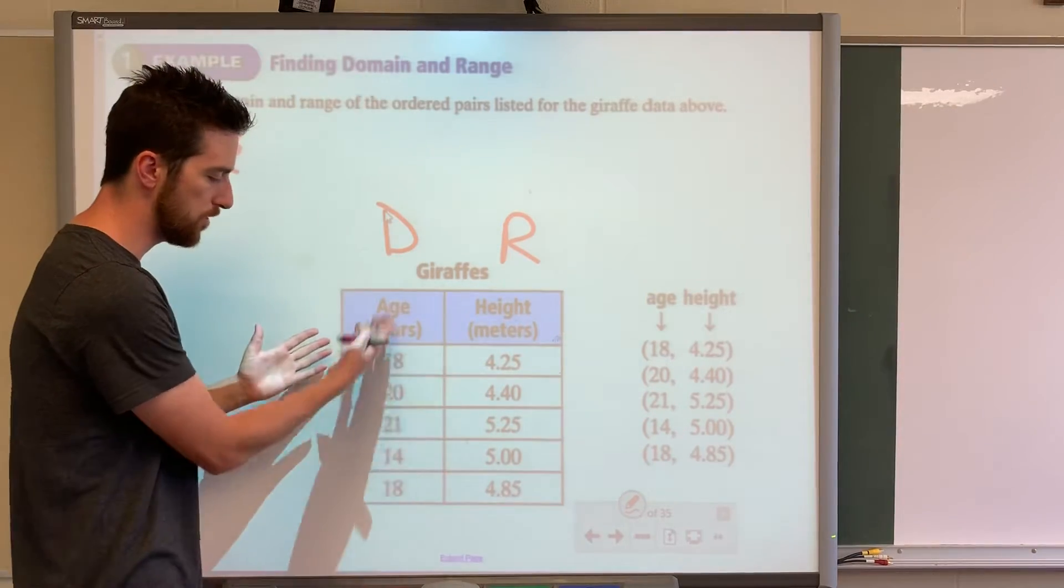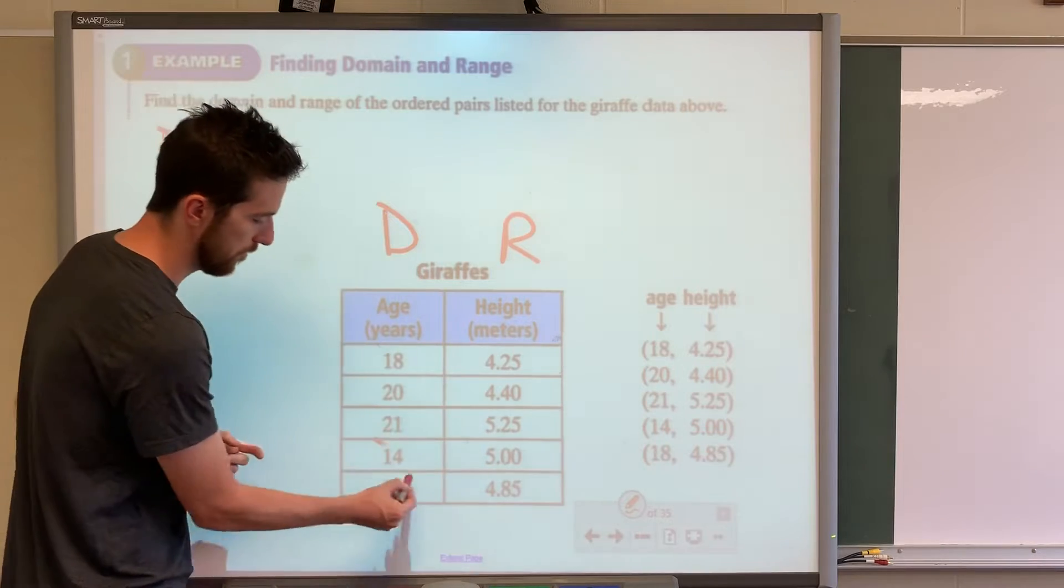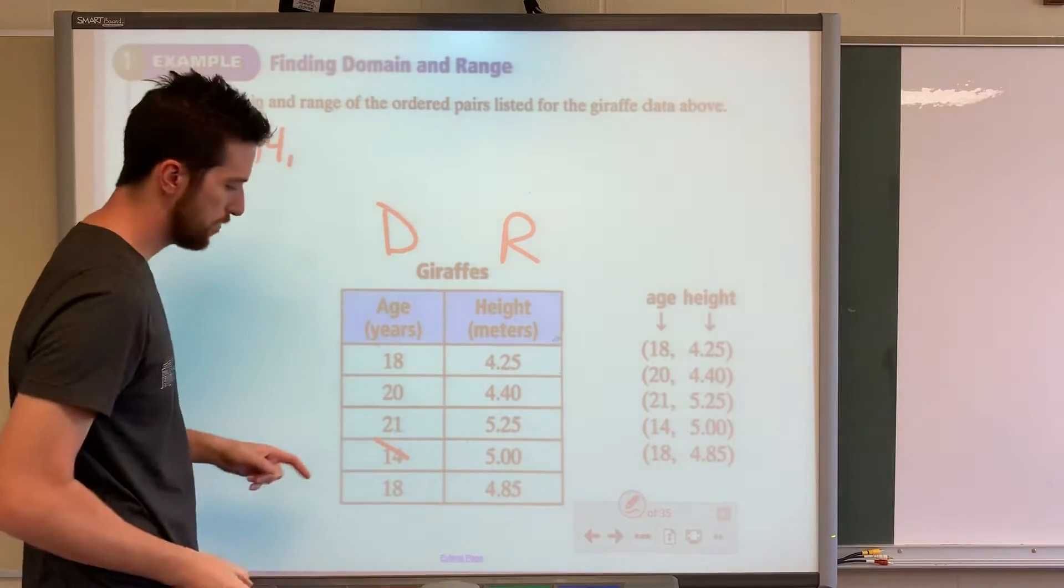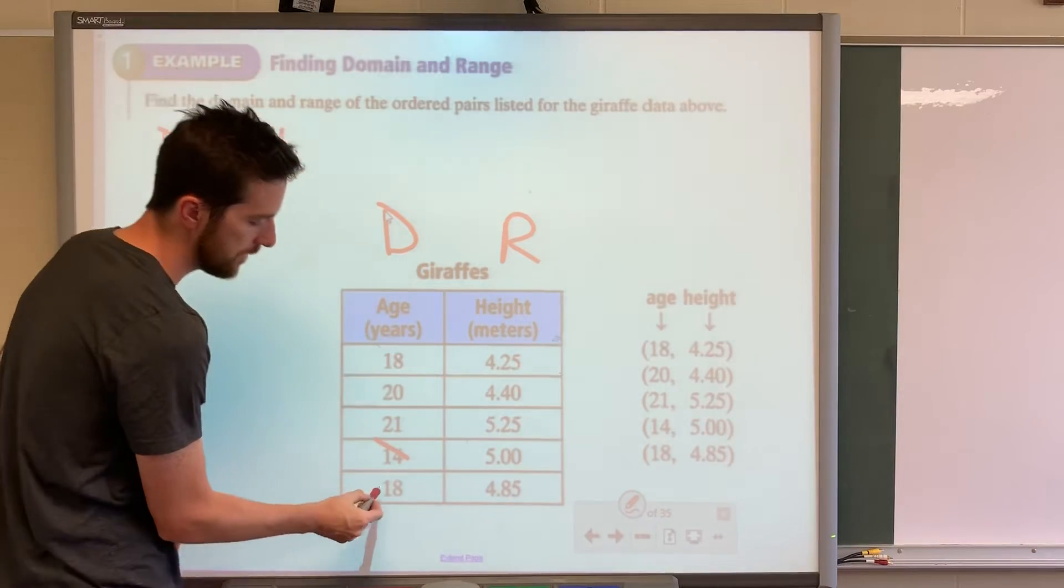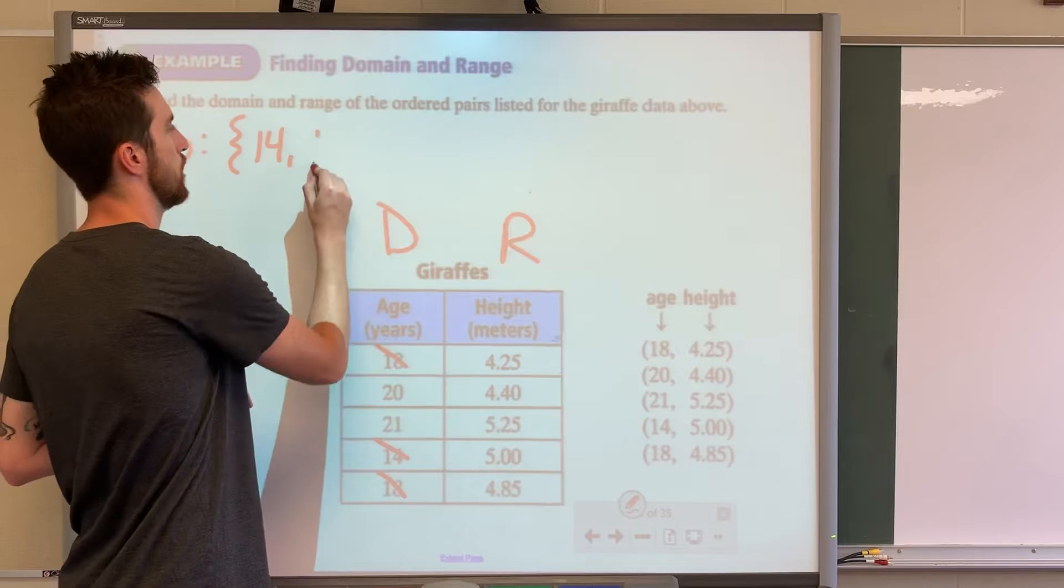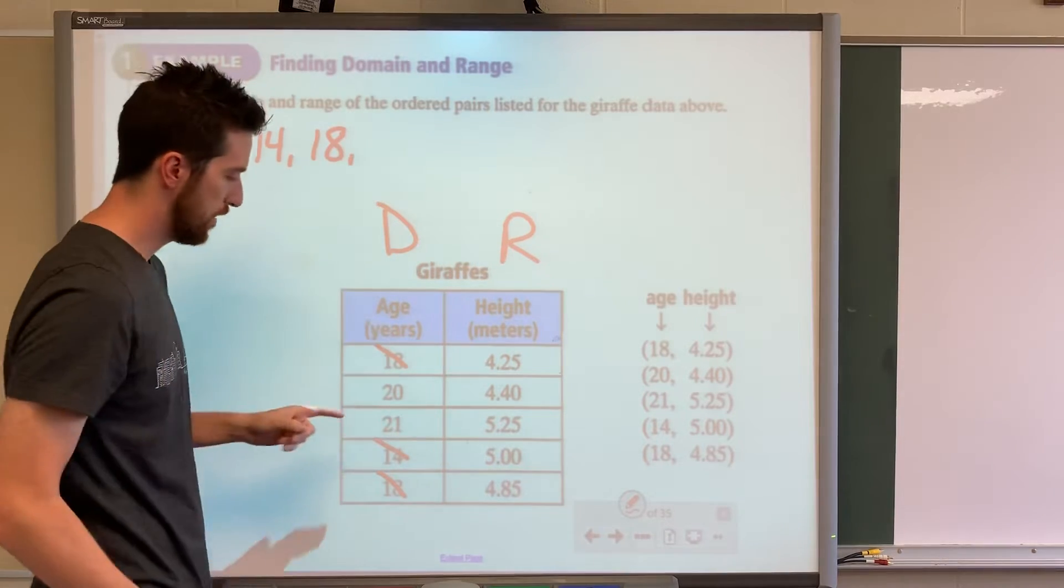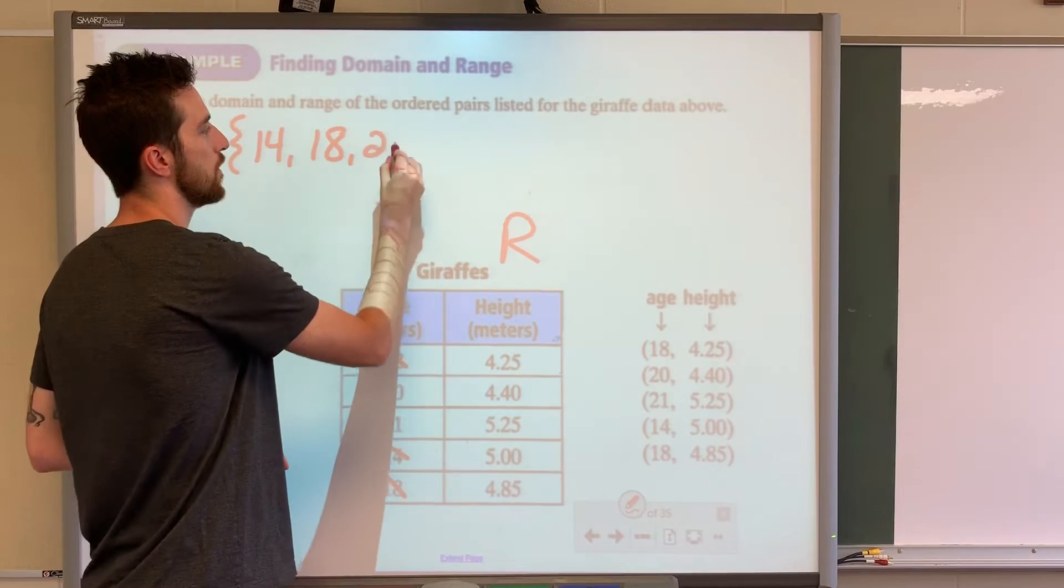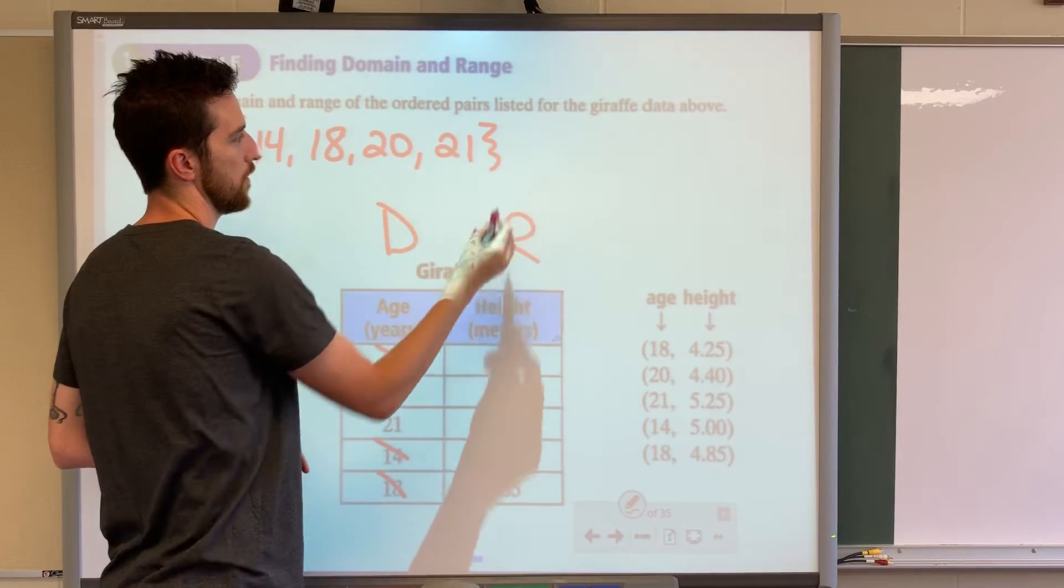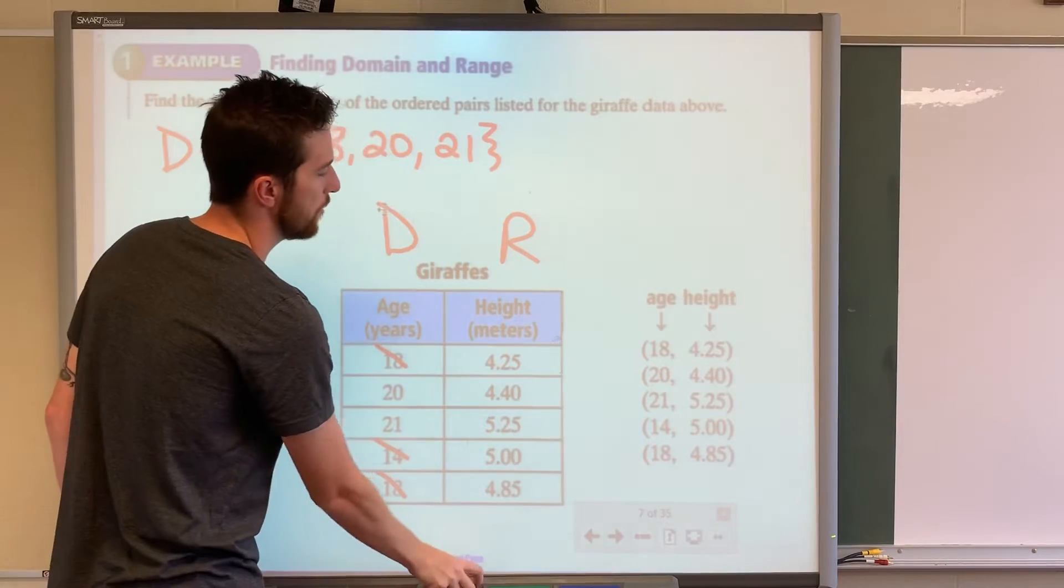So what's the smallest age we see here? Well, I see 14. That's the smallest, so I would write that first. After that, I have 18 and 18. It's in there twice, but we only write it one time. And then we've got 20 and 21. Then you write your squiggly parentheses to close it out.